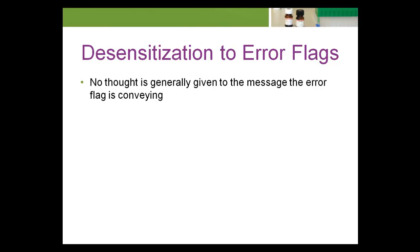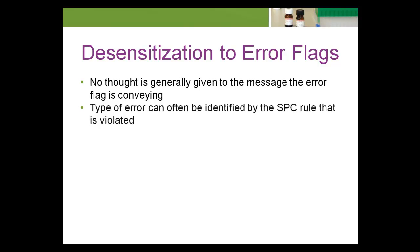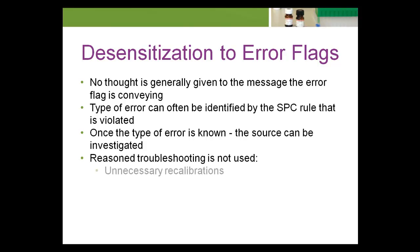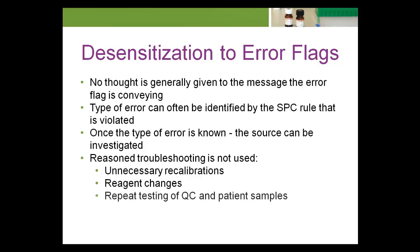When reasoned troubleshooting does not occur, no thought is generally given to the message the error flag is conveying. The type of error — random or systematic — can often be identified by the statistical process control rule that's violated. Once the type of error is known, then the source of the error can be investigated. When reasoned troubleshooting is not used, the results can be unnecessary recalibrations, reagent changes, and repeat testing of QC and patient samples, all of which equate to dollars wasted by the laboratory.